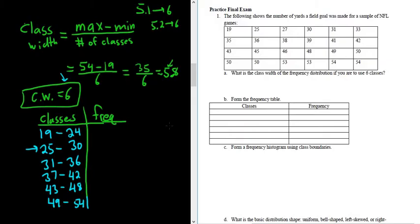To figure out the frequencies, you just count how many numbers are between 19 and 24. So in this case, we have just 1. 25 to 30: 1, 2, 3. So you do include the 30, so 3.